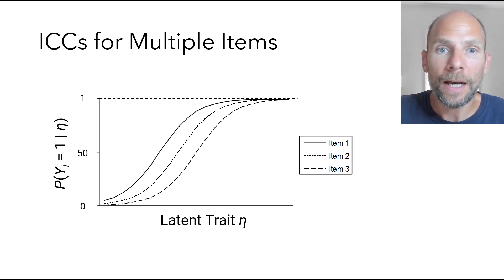For now, when we look at the item characteristic curves for multiple items, you can see that they're all parallel when the Rasch model fits the data. And that has to do with the fact that there's no item discrimination parameter, no multiplicative parameter estimated in the Rasch model. And therefore, all these curves are parallel.